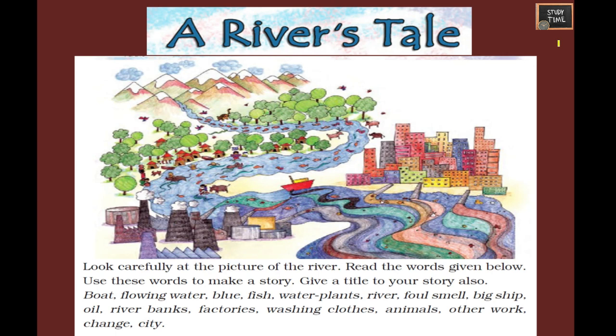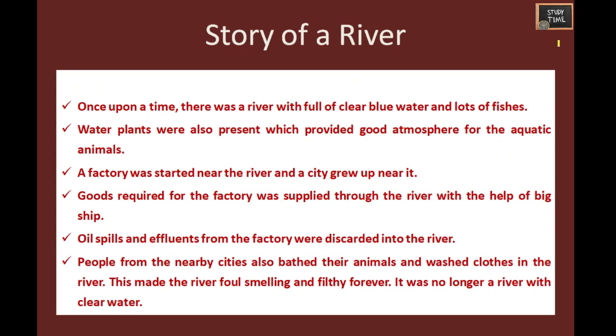Look carefully at the picture given. You're going to write a story based on the words given here: boat, flowing water, blue fish, water plants, river, foul smell, big ship, oil, river banks, factories, washing clothes, animals, other work, change, city. These are the words given. From this you're going to write a story and give a title for your story.